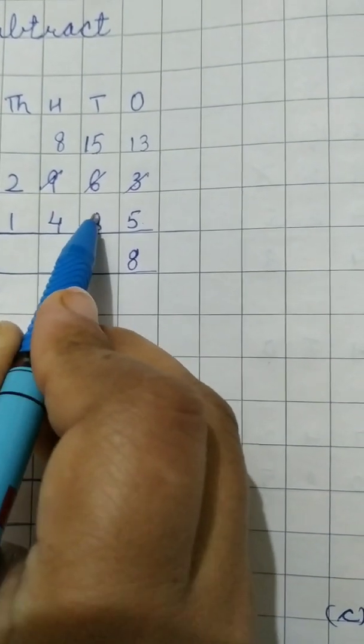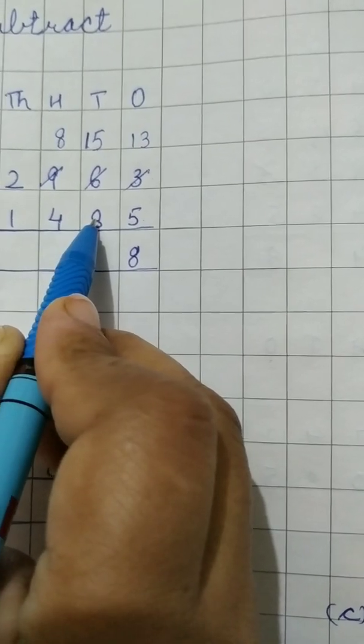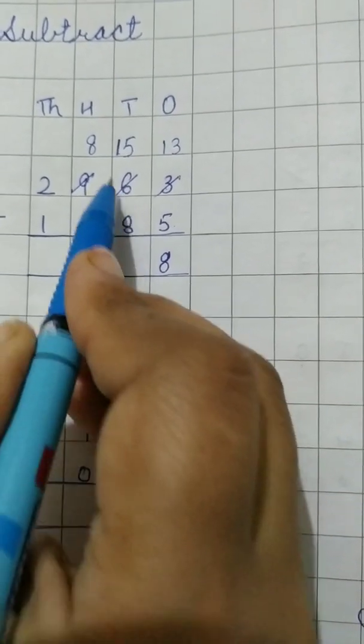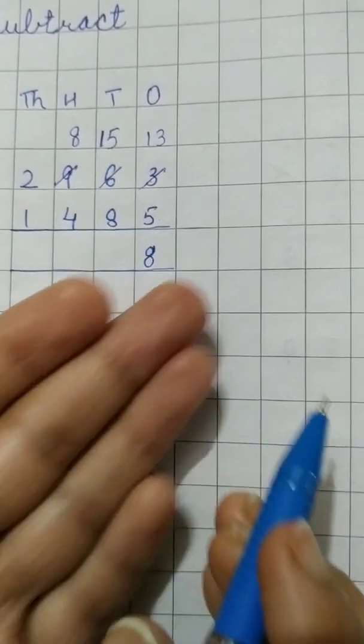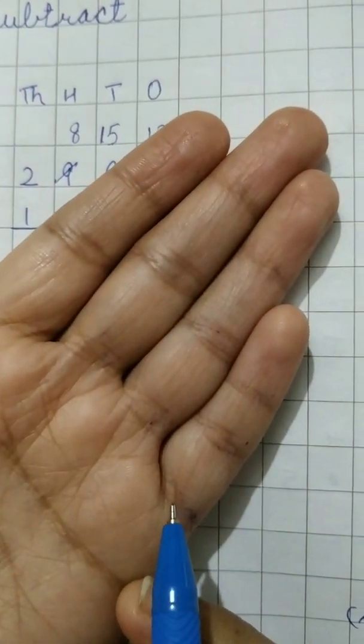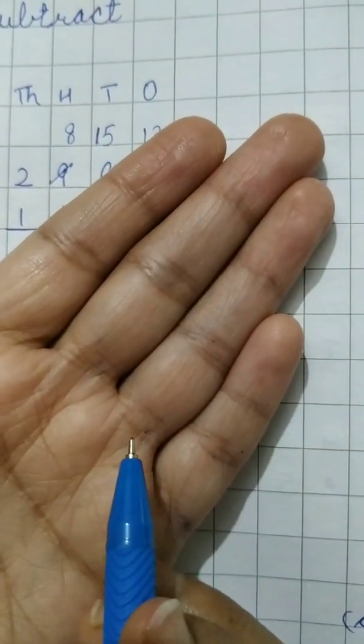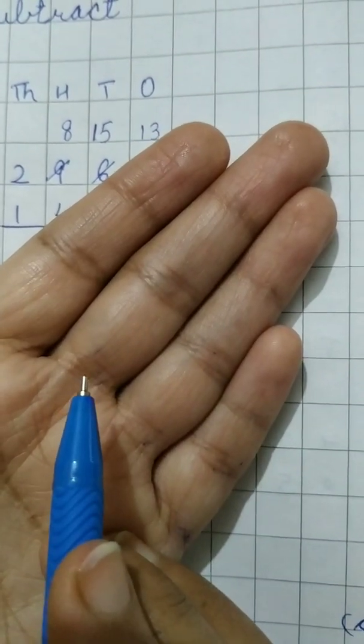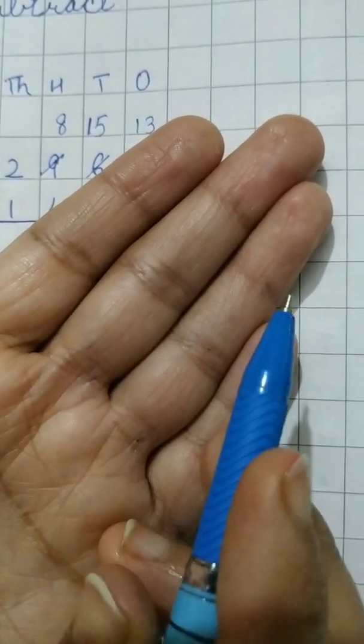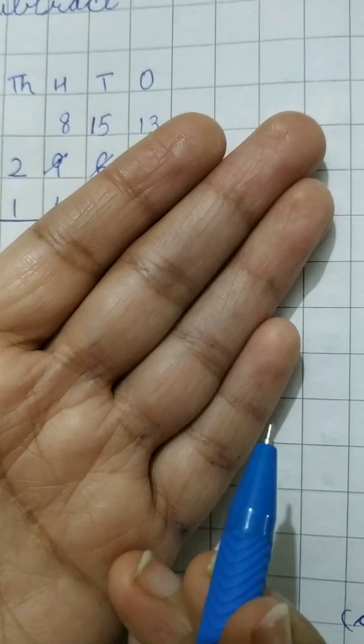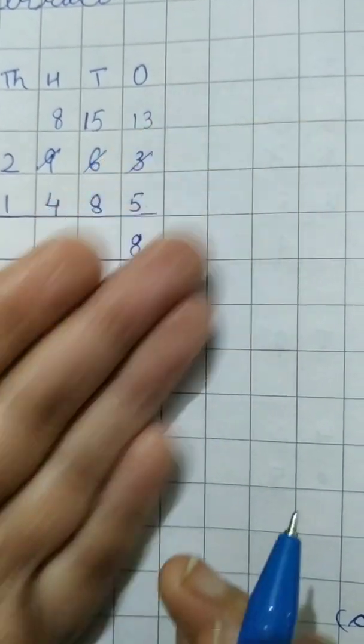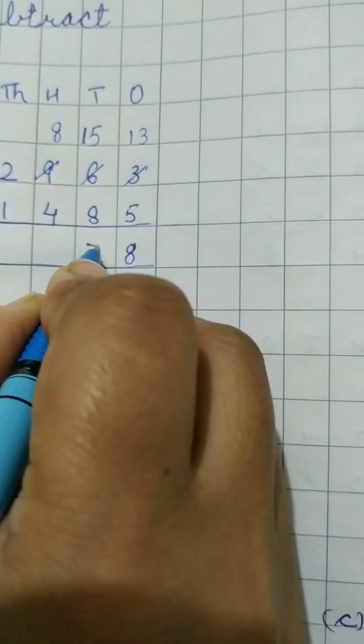We have to start from it is 8. So we will start from 9. From 9 we have to go till 15. Count 9, 10, 11, 12, 13, 14, 15. Count all the lines. 1, 2, 3, 4, 5, 6, 7. 15 minus 8 is 7.